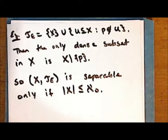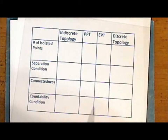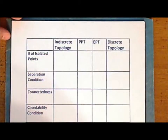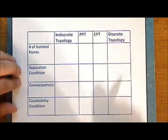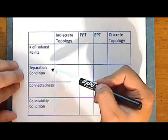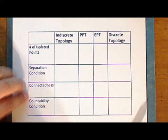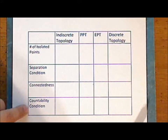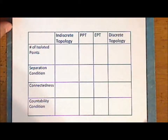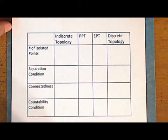Let's look at a consolidation via table of all the topological invariants that we have studied so far for the four topological spaces studied so far. Those properties are: the number of isolated points in the space, the strongest separation condition satisfied by the space, whether or not the space is connected, and now the strongest countability condition satisfied — specifically, whether or not a space is separable. We will soon see other countability conditions.